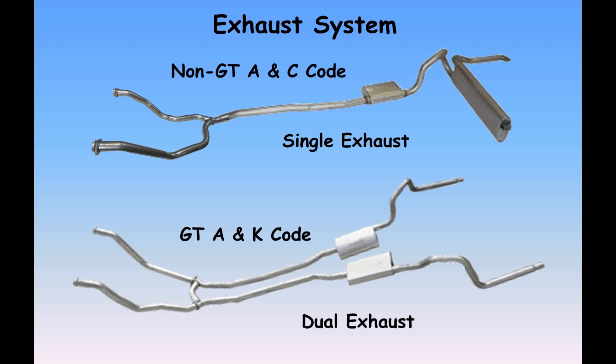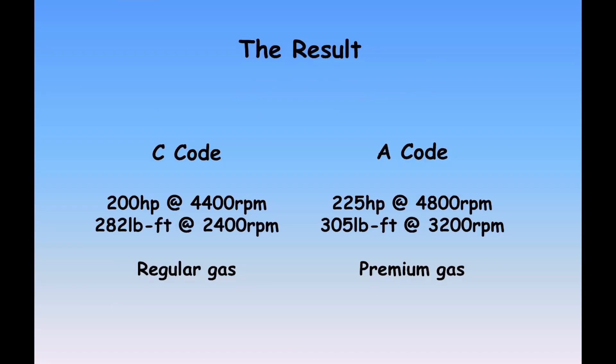The power numbers we see for the A-code and the C-code don't specify whether it's single or dual exhaust in any of the literature or manuals or specifications, so my assumption is that the power difference is based on the same common exhaust system. The C-code makes 200 horsepower at 4,400 RPM; the A-code bumps that up 25 horsepower to 225 at 4,800 RPM, so you've got a power curve that extends beyond what the C-code has.